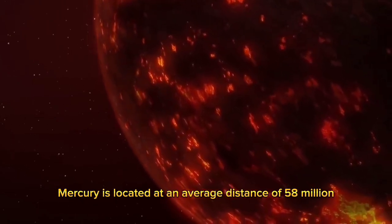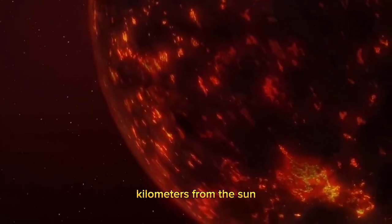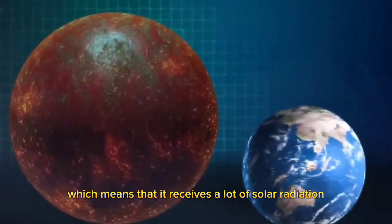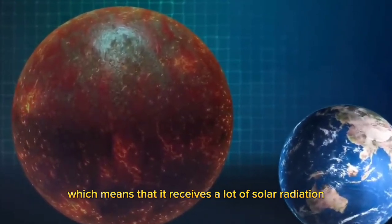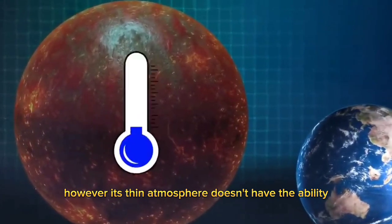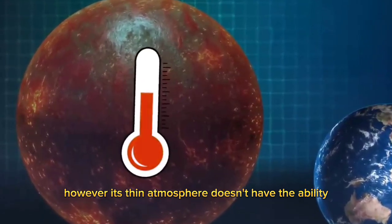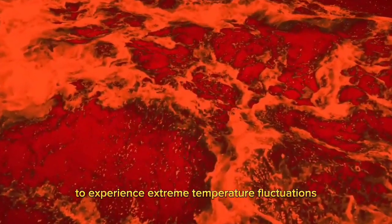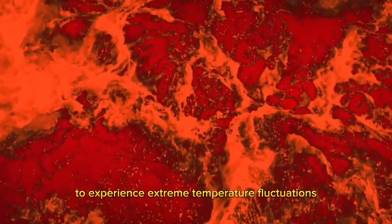Mercury is located at an average distance of 58 million kilometers from the Sun, which means that it receives a lot of solar radiation. However, its thin atmosphere doesn't have the ability to retain heat, which causes the planet to experience extreme temperature fluctuations.